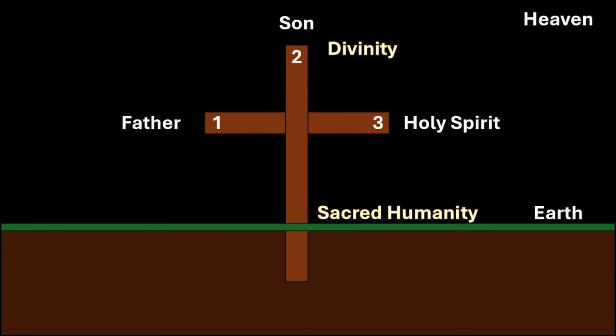Jesus Christ is Jacob's ladder. "Thy all-powerful word leaped from heaven, from the royal throne" (Wisdom 18.15). Taking on human form at the incarnation, being obedient unto death, even death on a cross (Philippians 2.8), he then descended into Sheol (Ephesians 4.9). Then he rose in glory, clothing himself with the imperishable (1 Corinthians 15.53, Romans 6.4). He ascended into heaven (Acts 1.11), where he is seated at the Father's right hand (Hebrews 1.3), bringing our humanity to the indescribable dwellings of divinity.